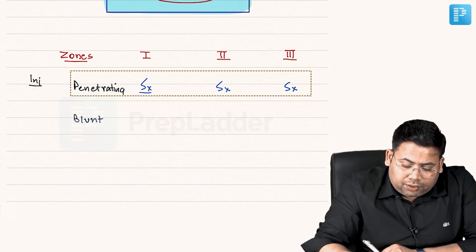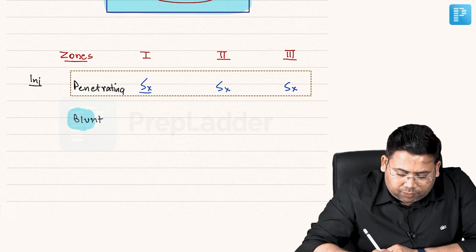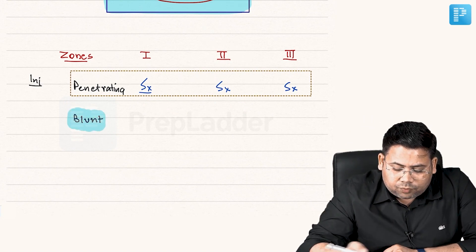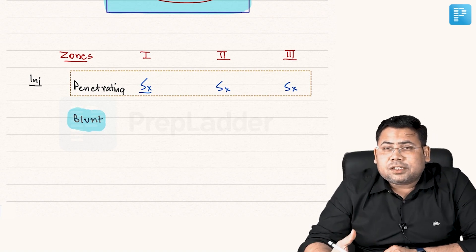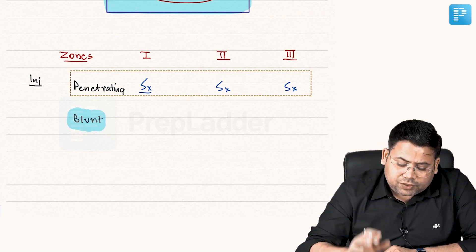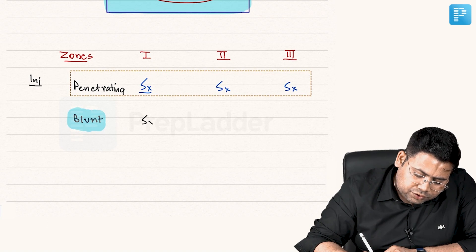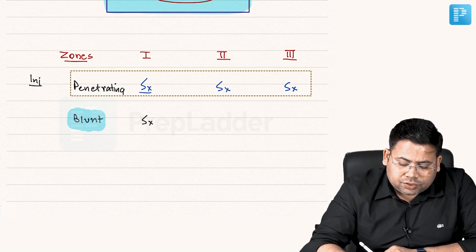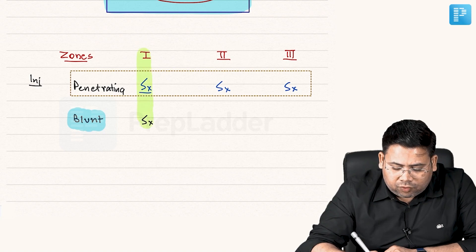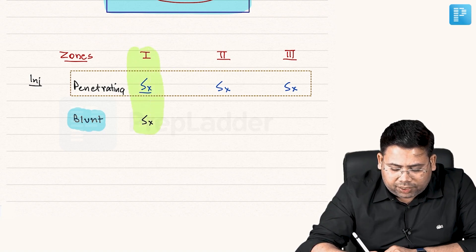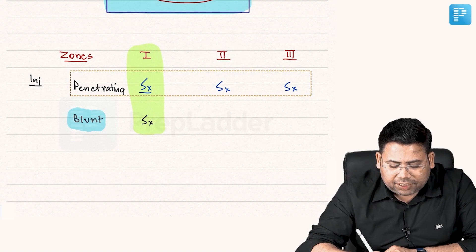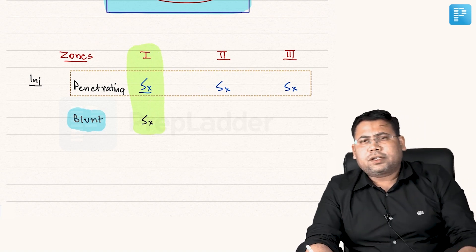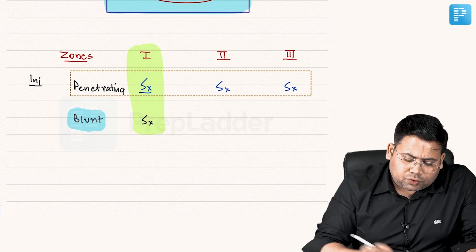Now, what about the blunt trauma? If it is a case of blunt trauma, then how to manage? Again, this is a question of your great vessels. Always you have to explore. So surgery. The moral of the story is any injury of any type to zone one, be it blunt, be it penetrating, the management is always surgery.